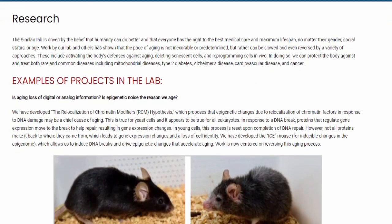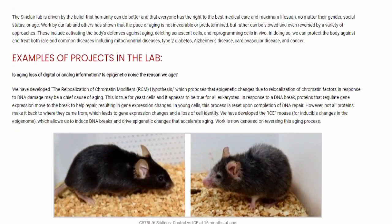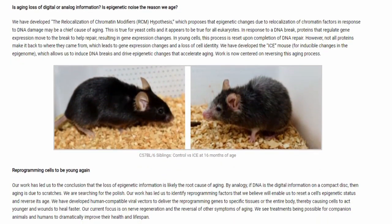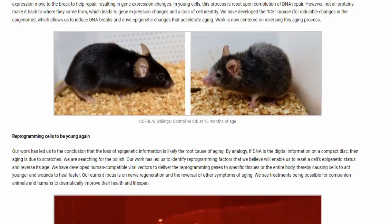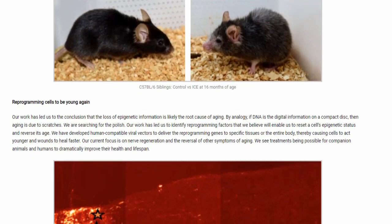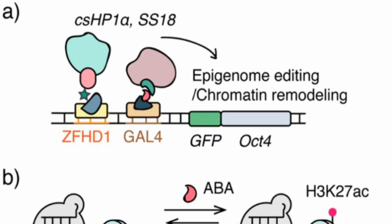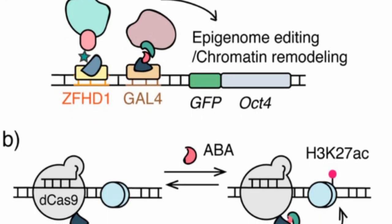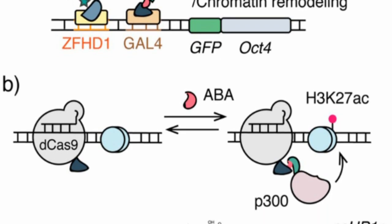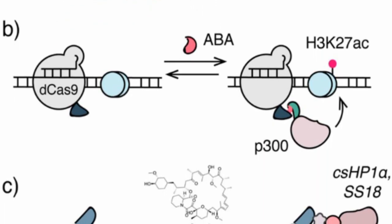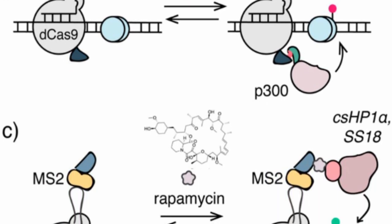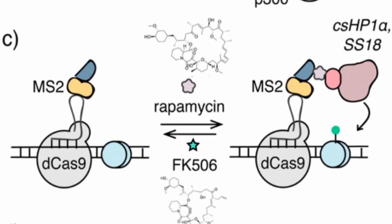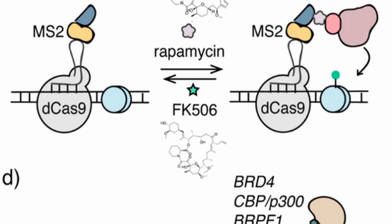Another key area to watch is the Sinclair Lab. Their team developed the Relocalization of Chromatin Modifiers, or RCM Hypothesis, which suggests that relocalization of chromatin factors in response to DNA damage may be a chief cause of aging. In response to a DNA break, proteins that regulate gene expression move to help repair the break, which often results in gene expression changes. This process is usually reset upon completion of DNA repair, however this does not always work correctly in older cells — not all proteins return to their original position, leading to gene expression changes and a loss in cell identity.